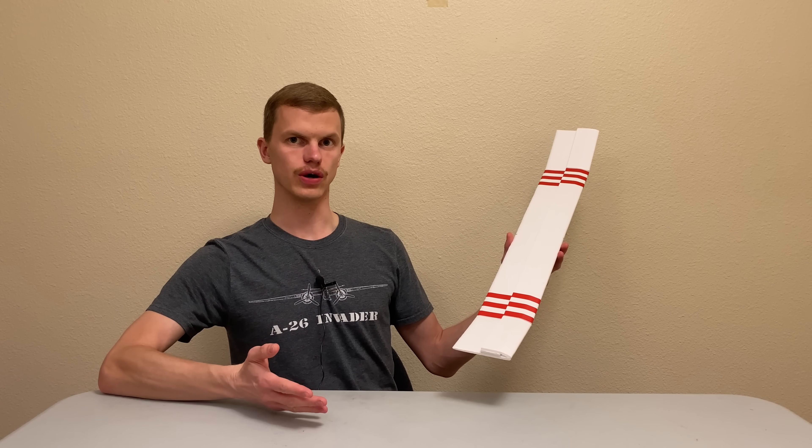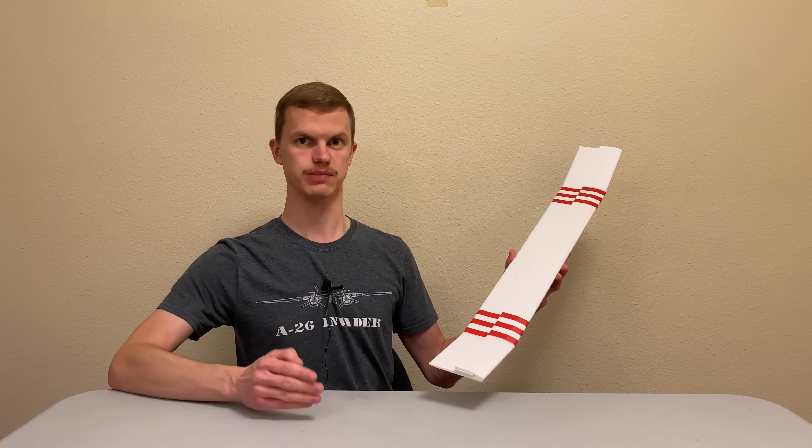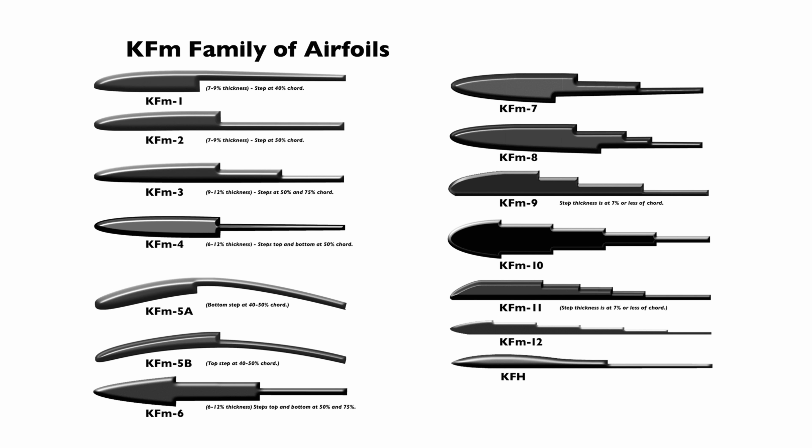This brings us to a design called the Kline and Fogelman airfoil, or the KF airfoil for short. It was developed in the early 1960s by Richard Kline and Floyd Fogelman for use in paper airplane contests. This airfoil is unique because it features a step instead of a smooth surface. Further iterations are referred to as KFM airfoils, which are popular in the model airplane community because they're easy to build, resistant to stalls, and can handle strong wind. Of particular interest to us, they also reduce skin friction. As air flows over a stepped airfoil, a small pocket of air is trapped behind the step, creating a vortex.